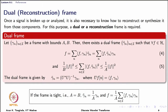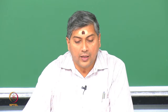The dual frame is given by this expression. The operator U you see here can be imagined as a matrix — it operates on f, multiplying with f to produce the coefficients being computed, essentially rewriting the inner product as a matrix multiplication with a vector. If you think of U as a matrix, then U-star-U inverse is the inverse of the product of U-star, which is the complex conjugate of U, since gamma-n can be complex valued. So U-star-U inverse times gamma-n gives you gamma-n-tilde.